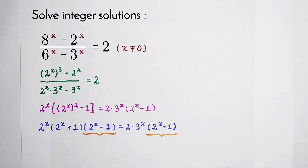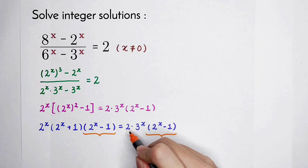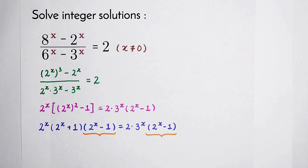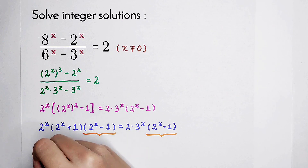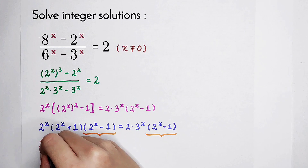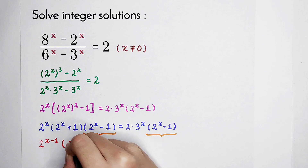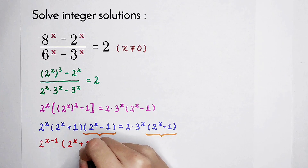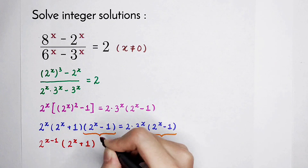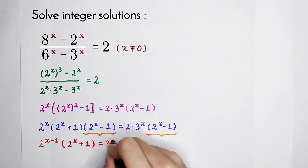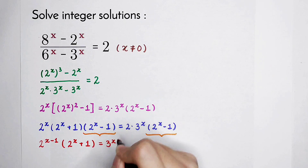For the next step, we can divide both sides by 2. Then this 2 to the power of x becomes 2 to the power of x minus 1, times 2 to the power of x plus 1. The 2 divided by 2 equals 1, so we have 3 to the power of x on the right side.